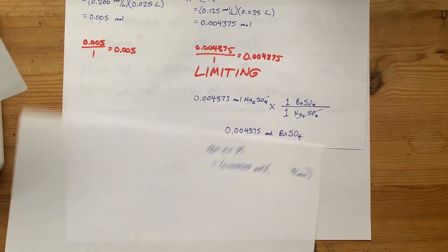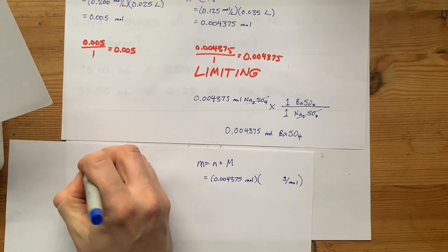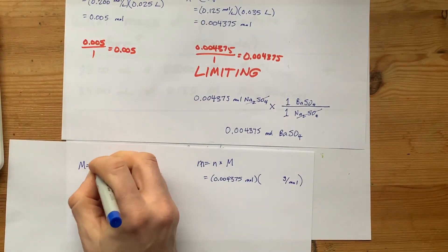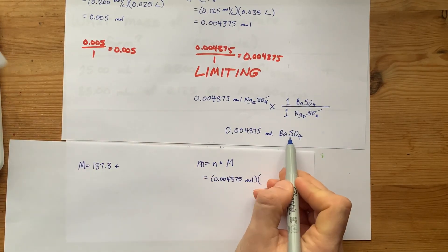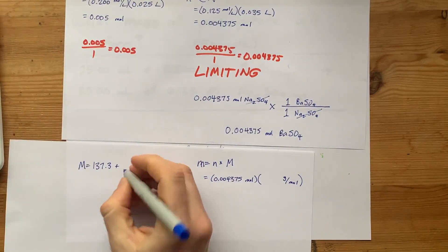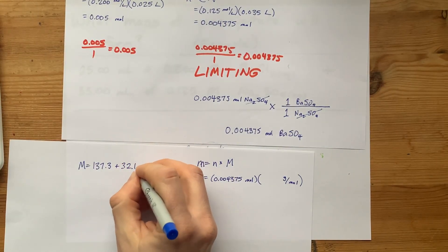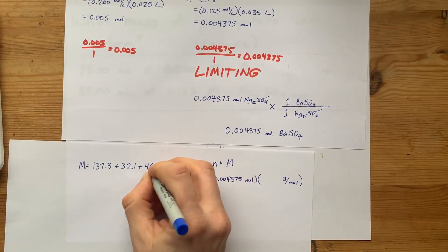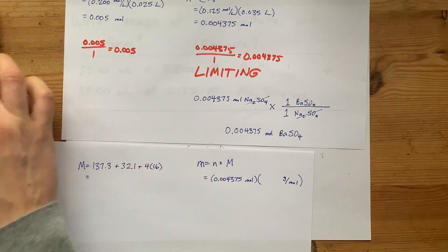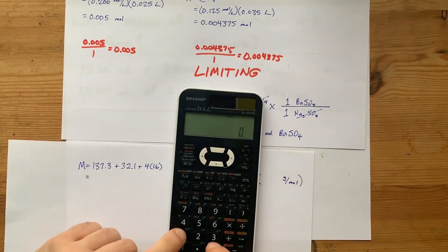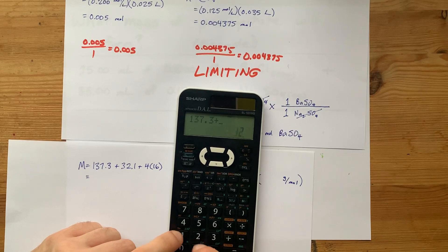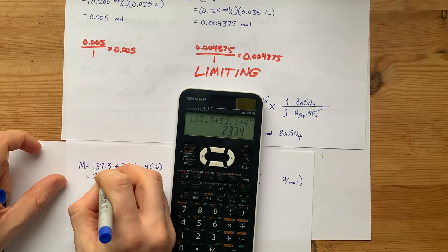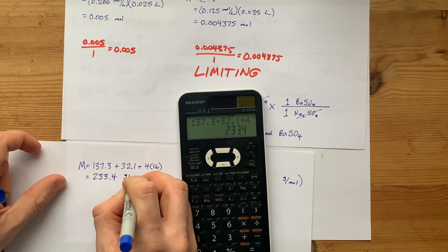The molar mass of BaSO4 is, whatever a Ba weighs, 137.3, added to whatever an S weighs, 32.1, according to this periodic table, and four O's. Each O weighs 16. When I combine those together, I end up with, who knows? 137.3, 32.1, and four 16s combined to make 233.4, and that's in grams per mole.